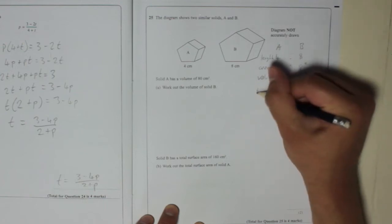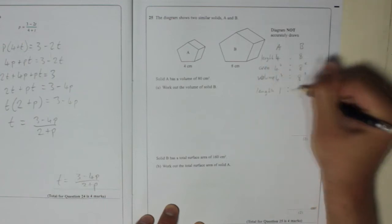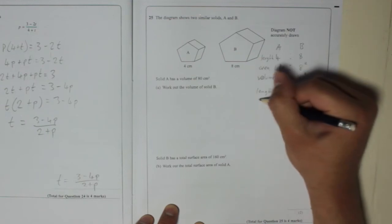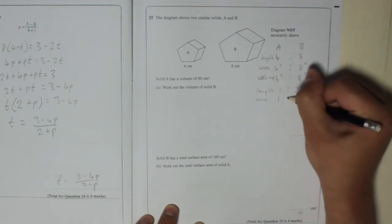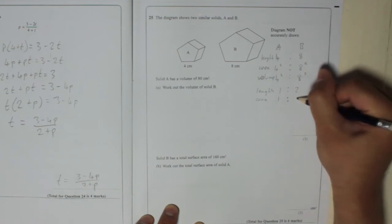So length is 1 to 2. Area is going to be 1 squared, which is just 1, to 2 squared, which is 4.